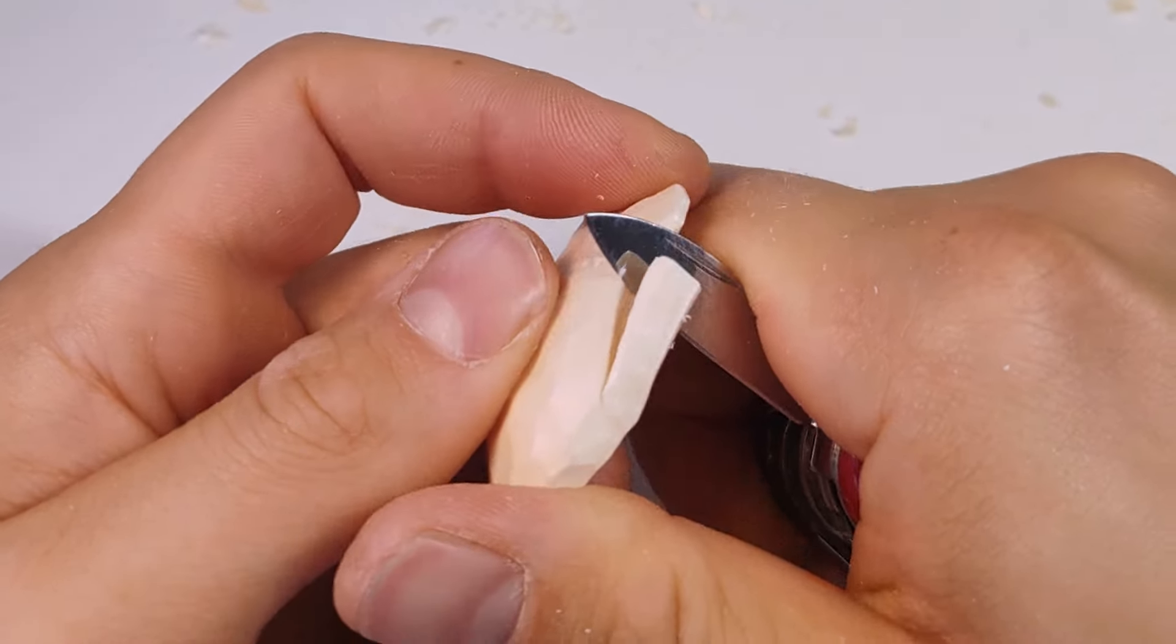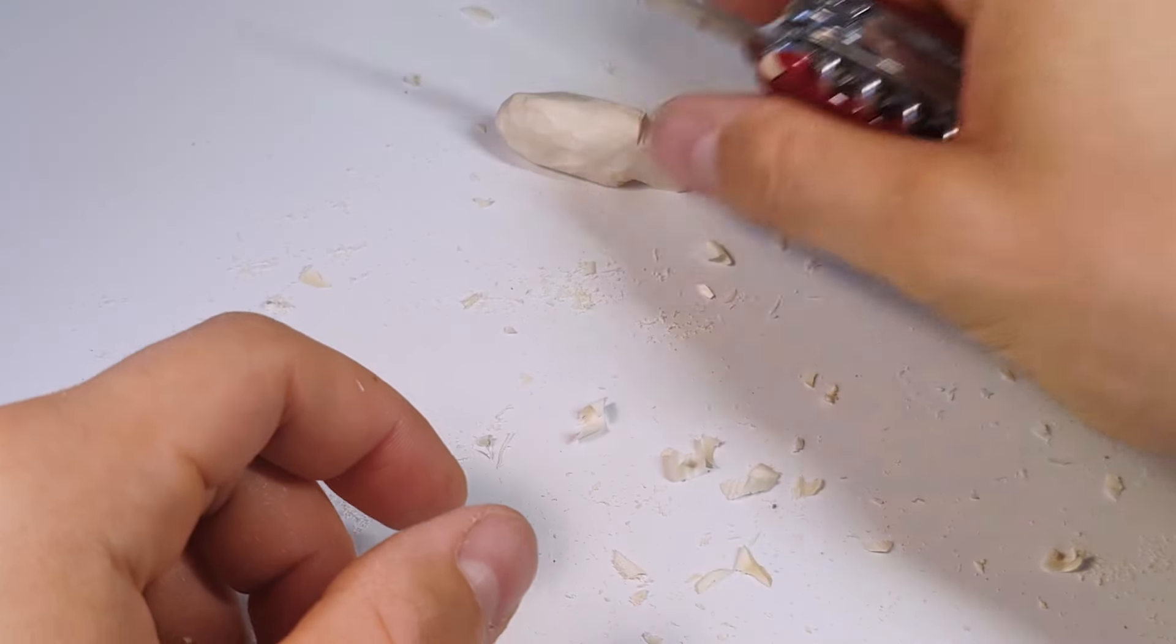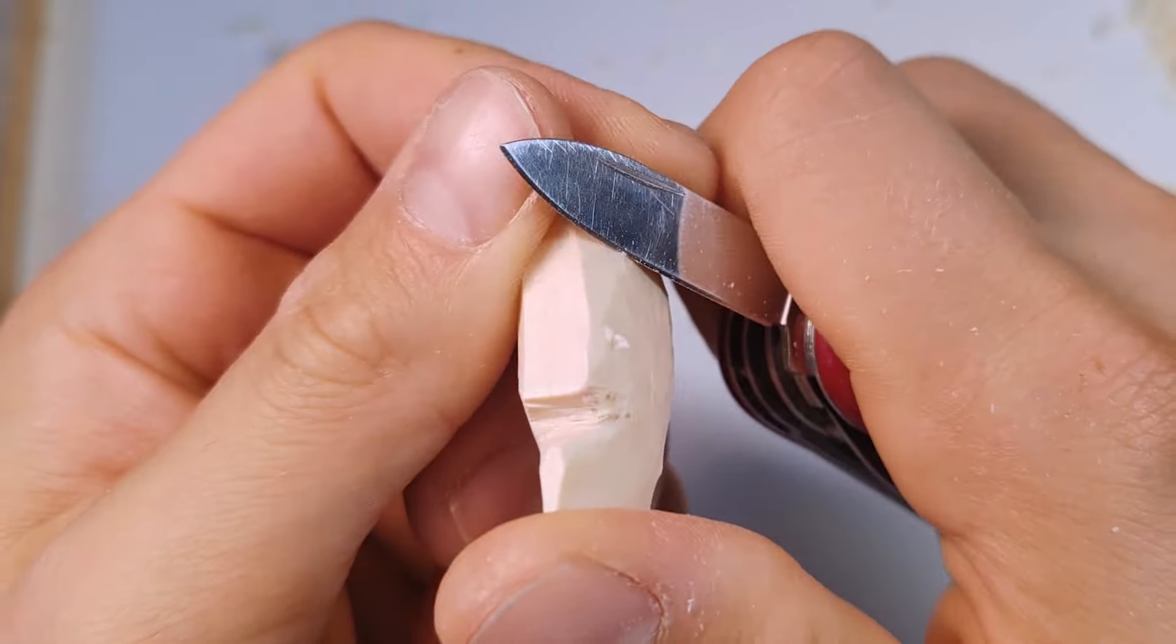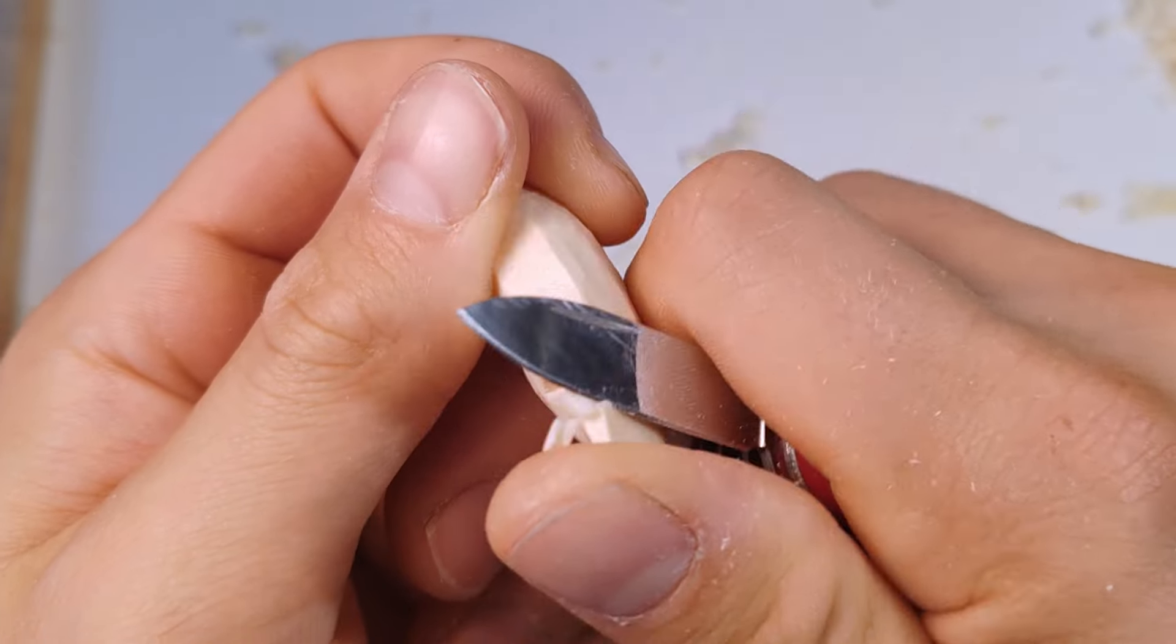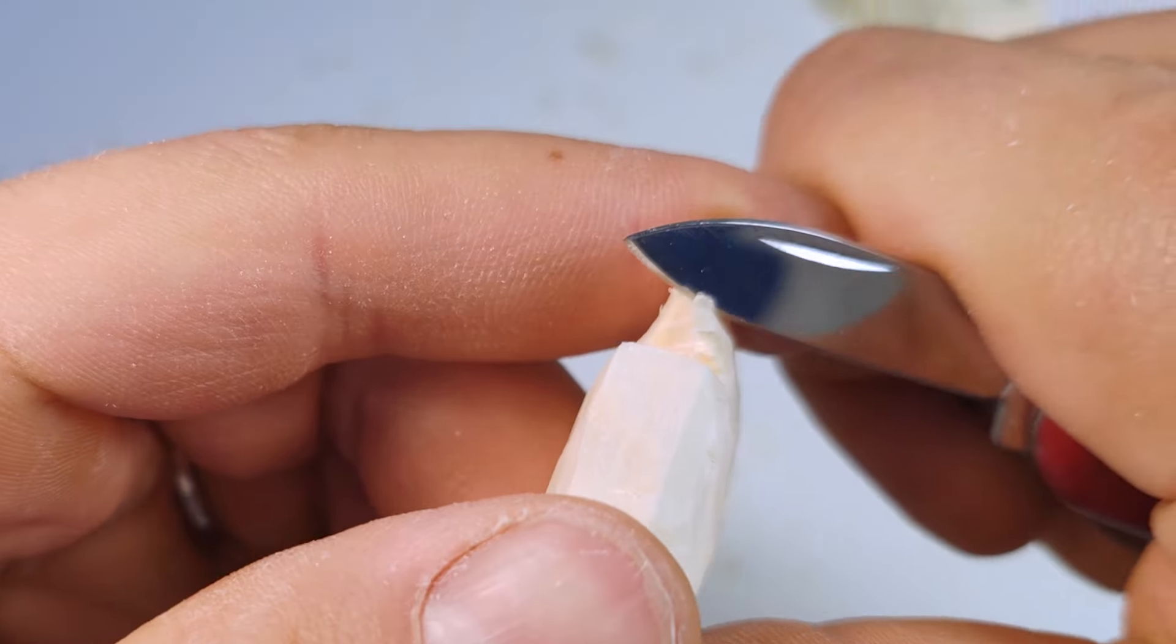Here I'm just flattening the bottom of the fish so that it doesn't fall on its side. Now it's time for some refinement. Try to make smaller cuts and give the existing shapes some smoothness and symmetry.